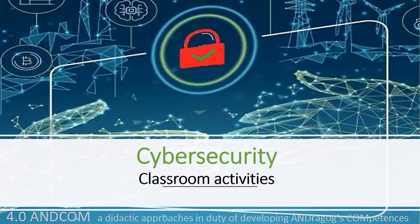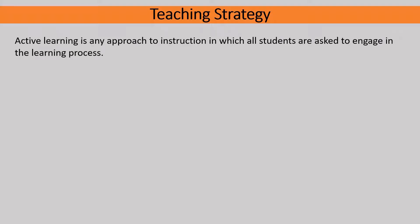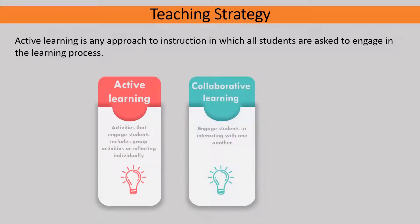Teaching strategies for different target audiences can be very important; however, active learning and making it engaging is always important. Active learning is any approach to instruction in which all students are asked to engage in the learning process. Active learning can take many forms and be executed effectively for cyber security training — commonly students will engage in small or large activities centered around writing, talking, problem solving, or reflecting.